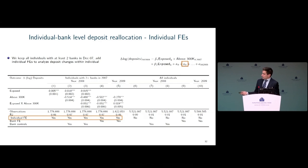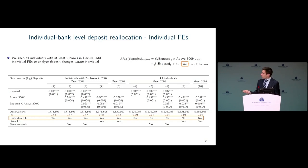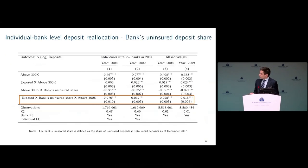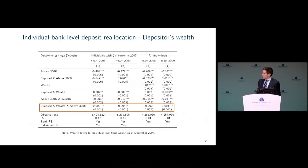When we go one year ahead to 2009, this effect reverses — consistent with bank-level evidence, liquidity pressure eased as soon as deposit insurance became unlimited. These effects hold up when looking at all depositors in the economy, not just the matched sample. Furthermore, these effects are amplified at exposed banks with a greater share of uninsured deposits, and are stronger among wealthier depositors, who appear to engage more in monitoring their banks during the crisis.